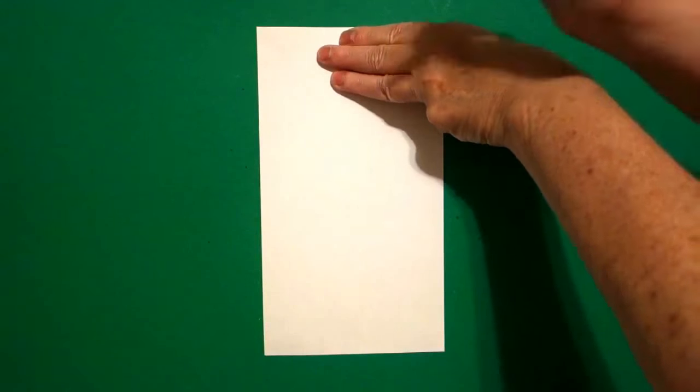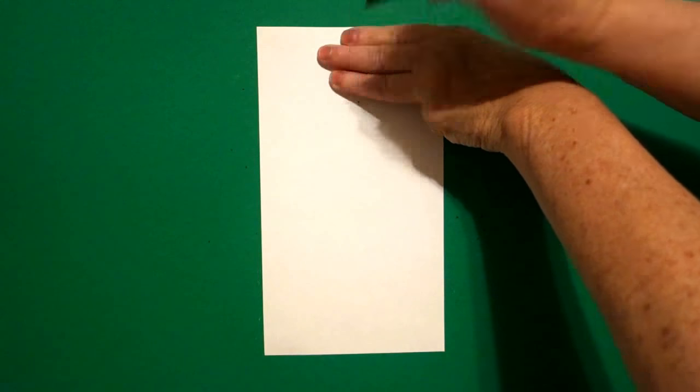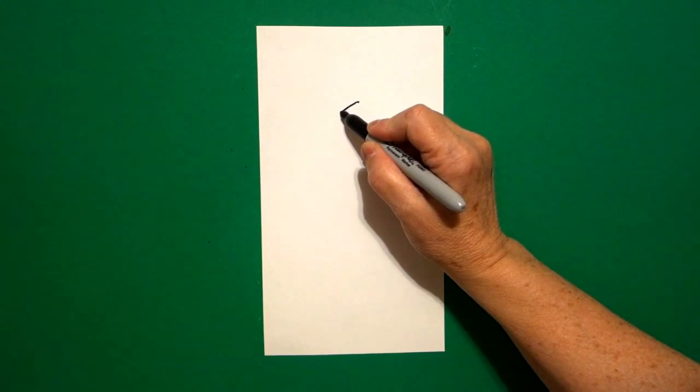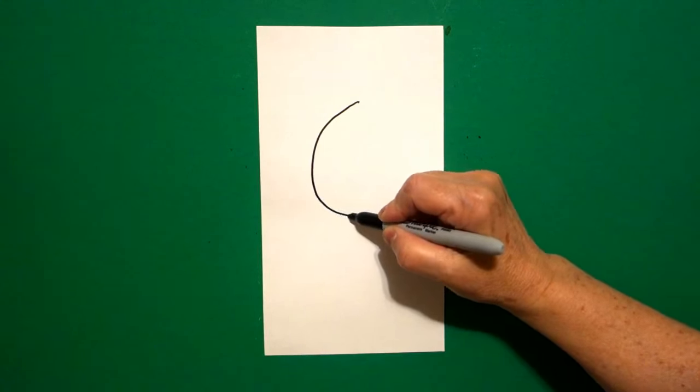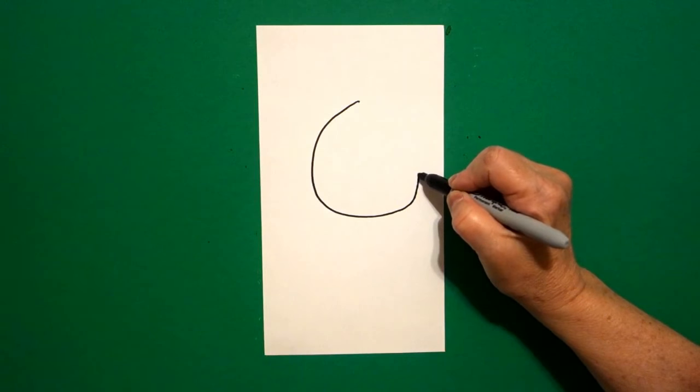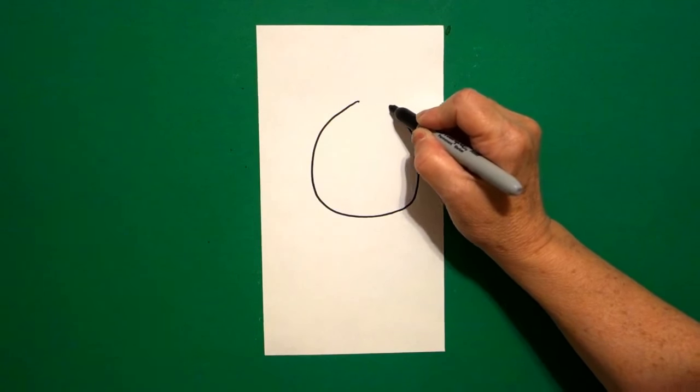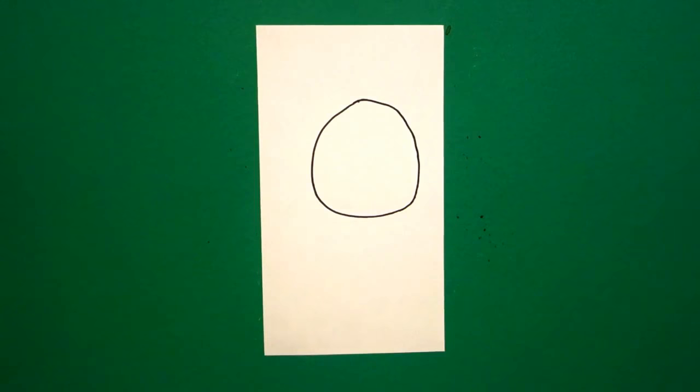I'm going to take three fingers at the center and put a dot. And from that dot, I'm going to draw a curve line down, curve line around, curve line up, and connect.